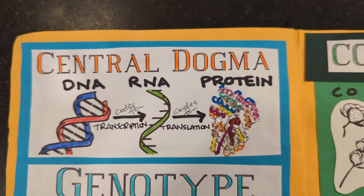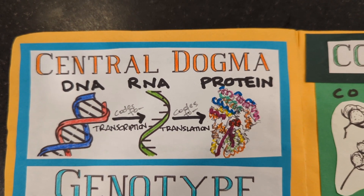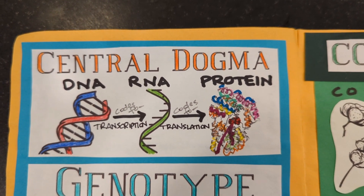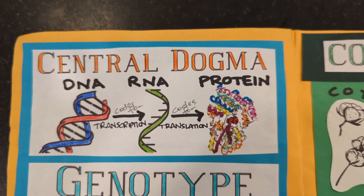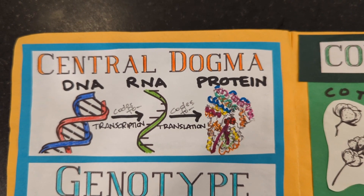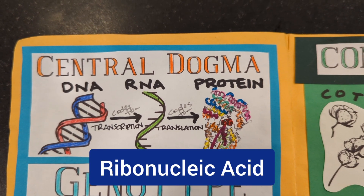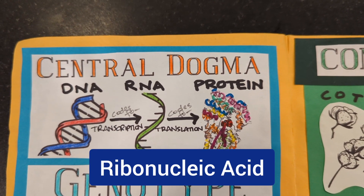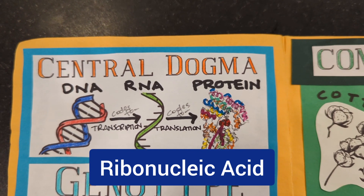You've learned the structure of DNA, so you should know that it is a double helix. RNA is another nucleic acid, but instead of being deoxyribonucleic acid, it is ribonucleic acid. It has a different sugar, and it is single-stranded.